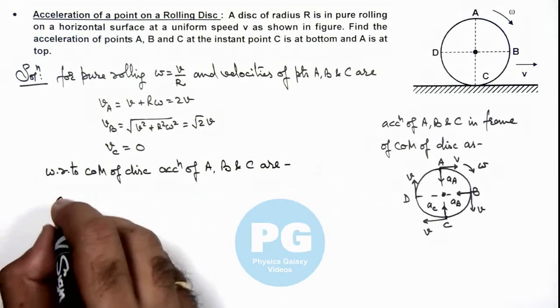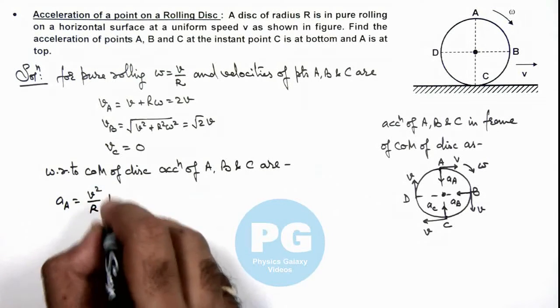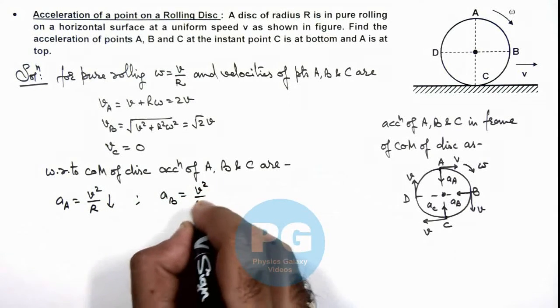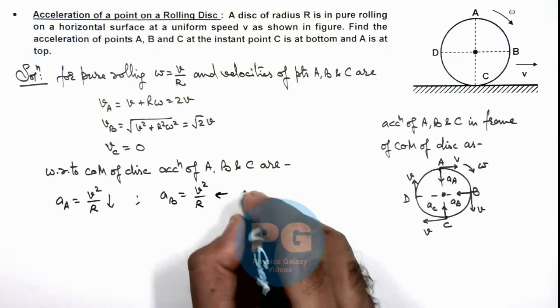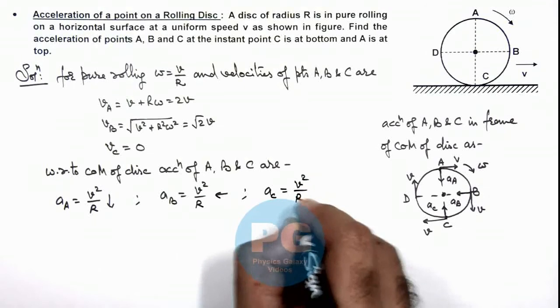Acceleration of A will be v square by R in downward direction. Acceleration of B will be v square by R in leftward direction. And acceleration of C will be v square by R in upward direction.